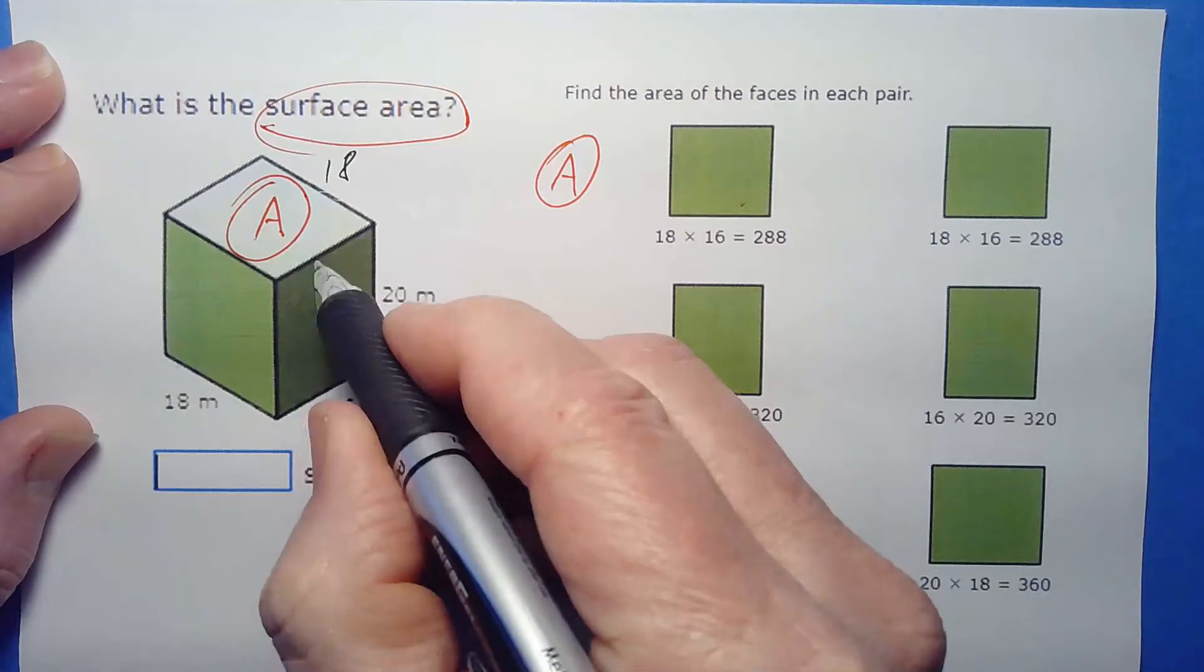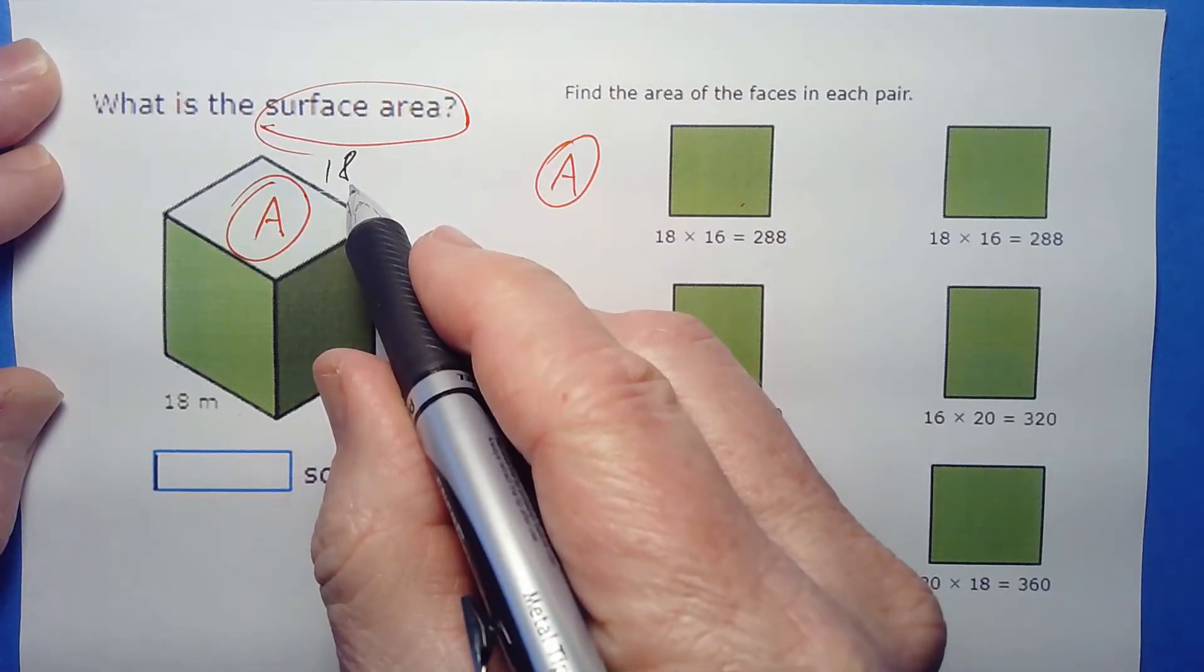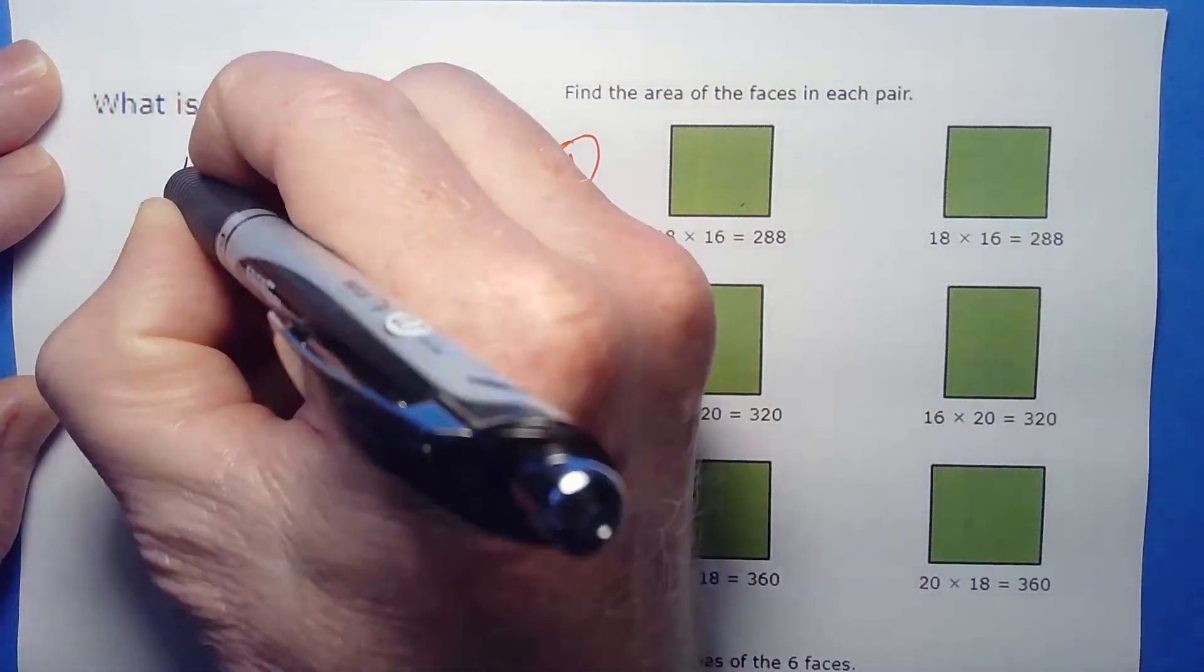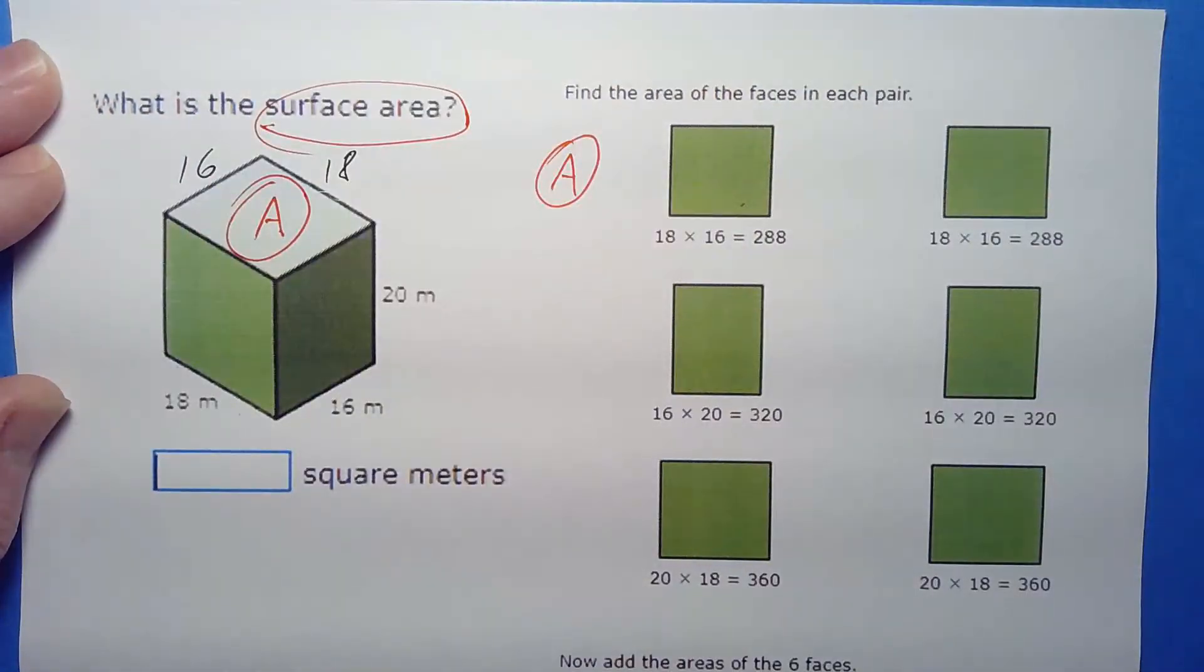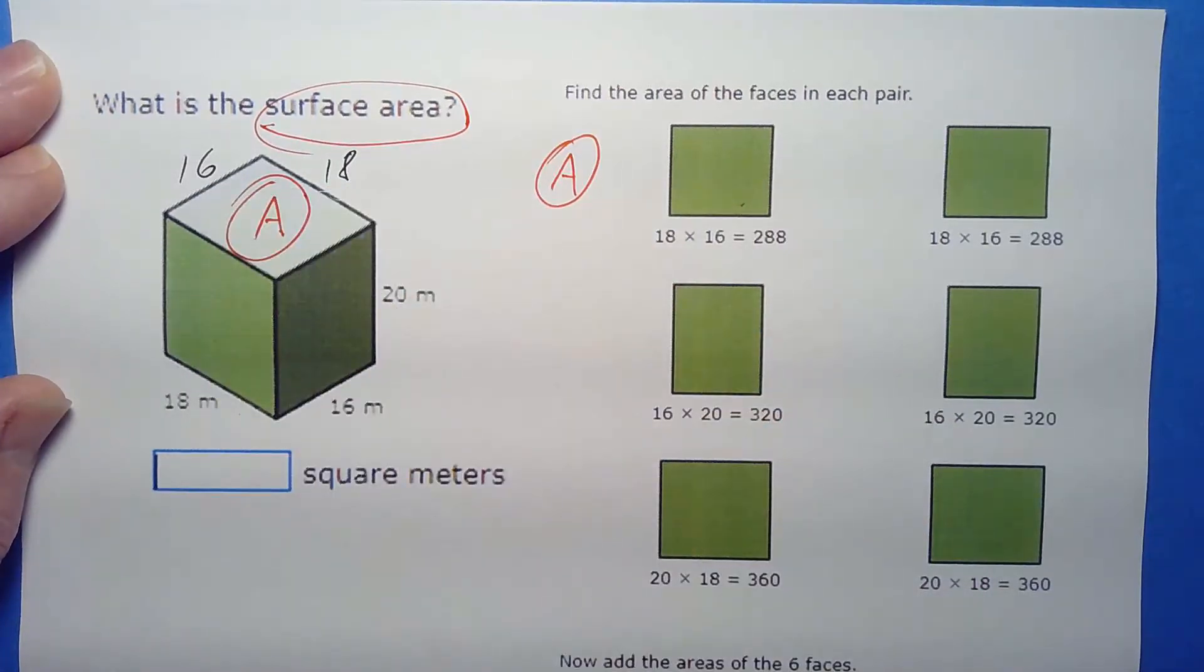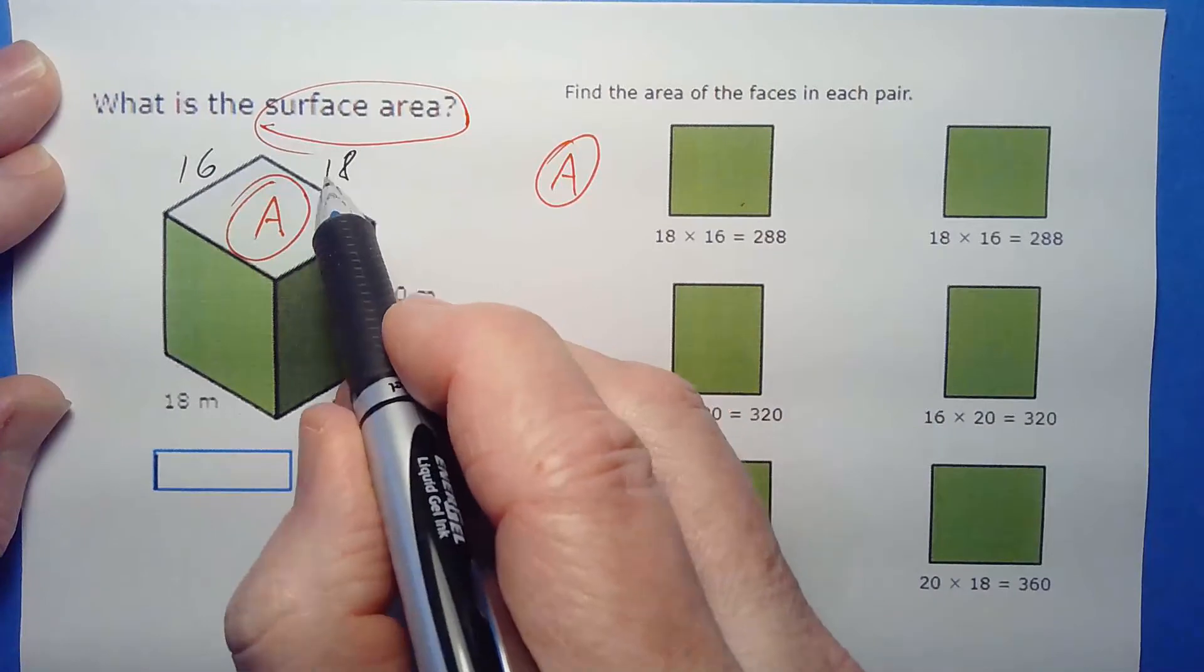So look, here's 18, here's 16. Now it often helps to rewrite those surfaces, those numbers, off to the side. Here's 18, 18, 18. Notice those are all parallel. All the edges that are parallel are going to be the same when it's rectangular.